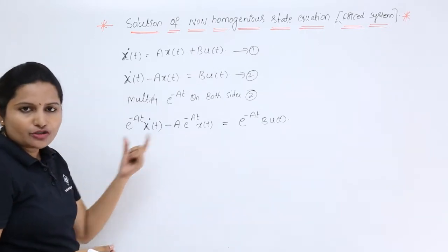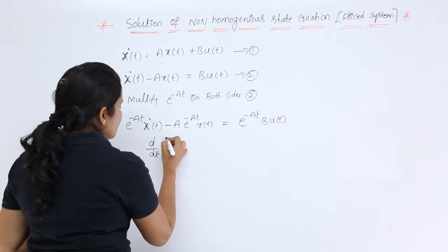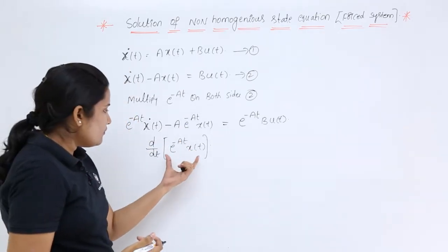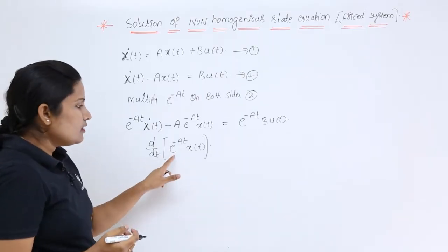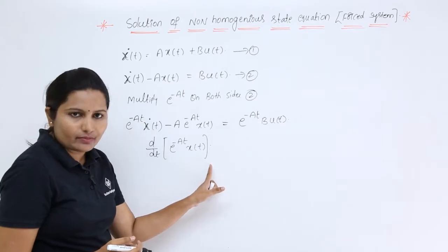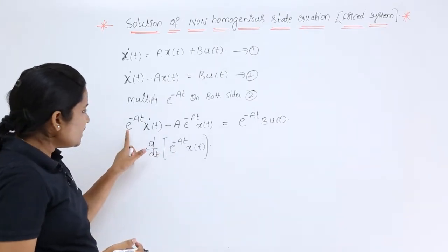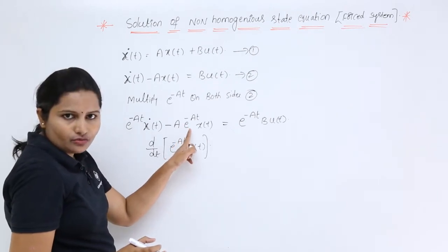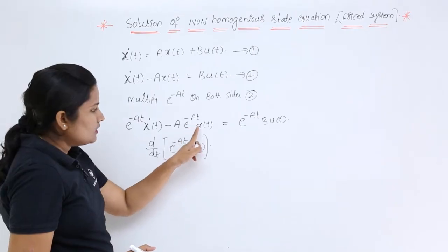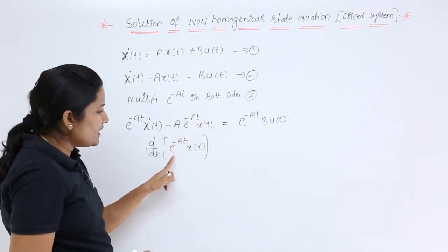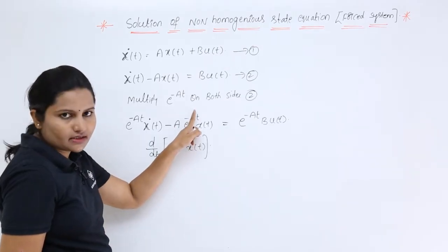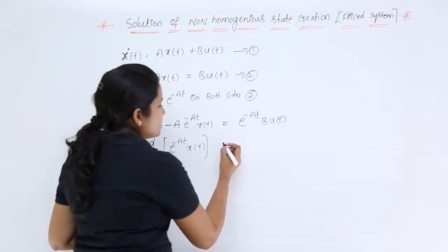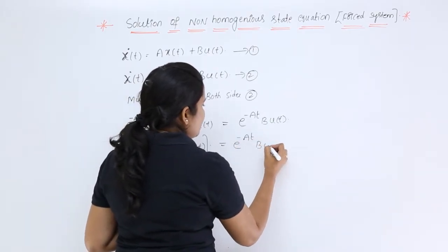The left-hand side can be recognized as d/dt of [e^(−At)·x(t)], using the product rule d/dt(uv). Here u = e^(−At) and v = x(t), so the derivative gives the same expression. Therefore, d/dt[e^(−At)·x(t)] = e^(−At)·B·u(t).